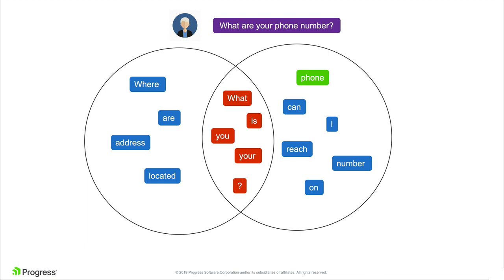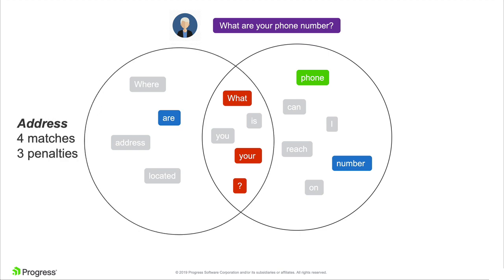If we try another expression like 'What are your phone number?' — and don't mind the grammar, the mistake is on purpose — we can again use the model to match each of those tokens. We matched 'are', 'what', 'your', question mark, 'phone', and 'number'. Analyzing that, the address Q&A has four matches of which three are penalized.